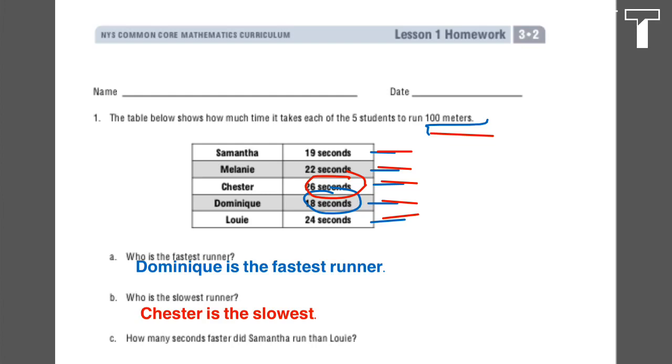The last part, part C states, how many seconds faster did Samantha run than Louis? So when we're looking at how many seconds faster, we're looking for the difference between Samantha and Louis.